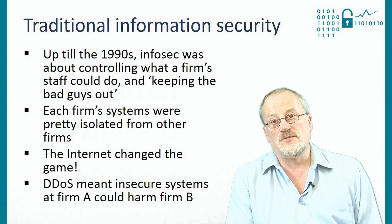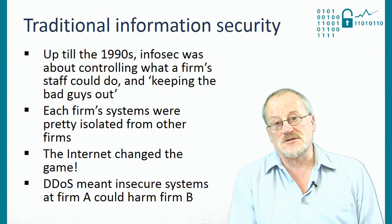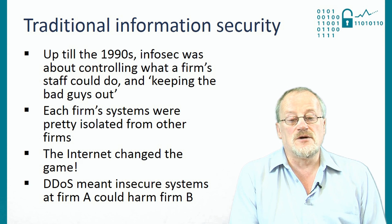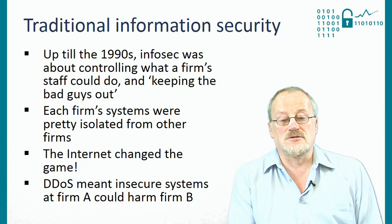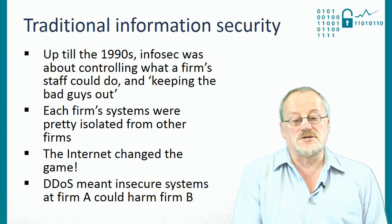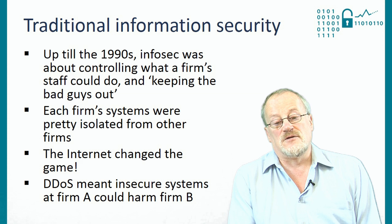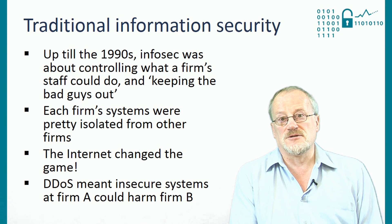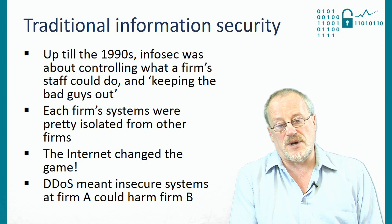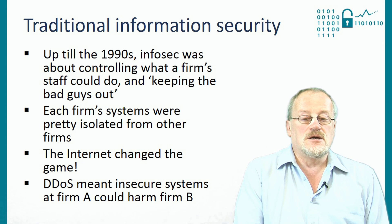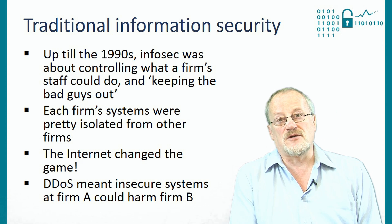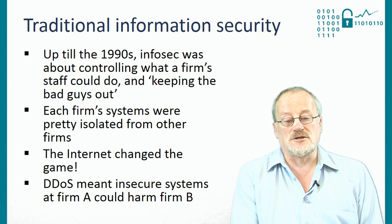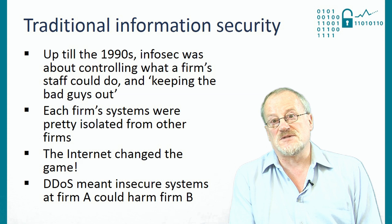The traditional world of information security from the 1960s, when we started getting shared computer systems up until the 1990s, saw information security as a really technical subject which was about controlling what a firm's staff could do for the most part, and also keeping the bad guys out. A bank system would have access controls that would say what tellers could do, what accountants could do, what managers could do. Each firm's systems were pretty much isolated from other firms, so if the Midland Bank screwed up, that didn't affect Barclays. People could run their systems in isolation.